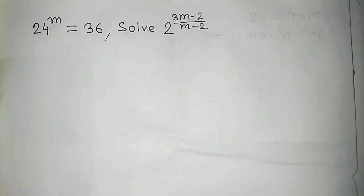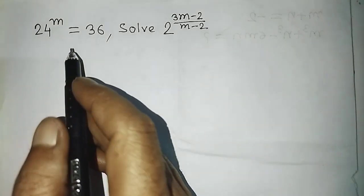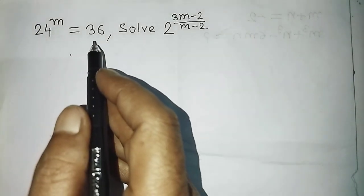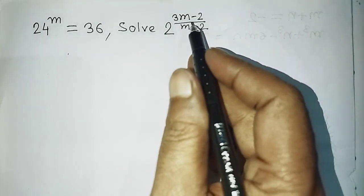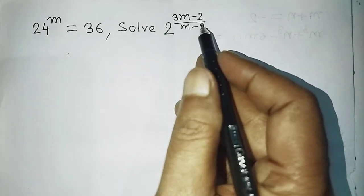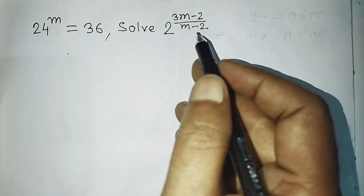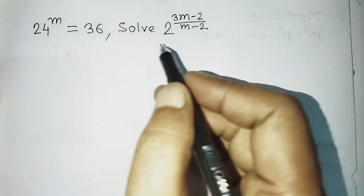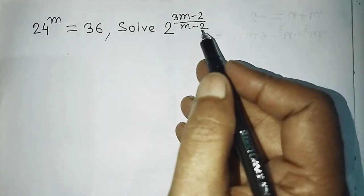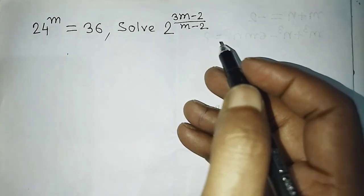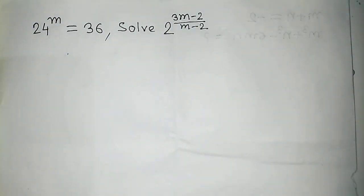Hello students, welcome back to my channel Alim Math Vlog. Today our question is: 24 whole to the power m is equal to 36, then find the value of 2 to the power 3m minus 2, divided by m minus 2. From this equation we need to find the value of 2 to the power (3m-2) divided by (m-2). Today I will show you a very easy process.